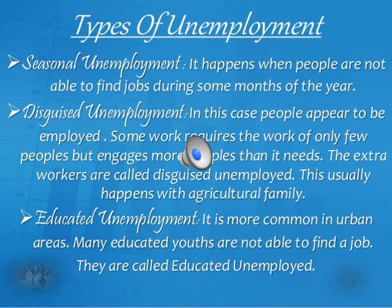Though people are skilled and educated, they still do not have jobs — this is a major problem faced by India. There are three major types of unemployment: seasonal unemployment, disguised unemployment, and educated unemployment. Seasonal unemployment happens when people are not able to find jobs during some months of the year. This type usually occurs in rural areas where there is no farming work for two to three months.